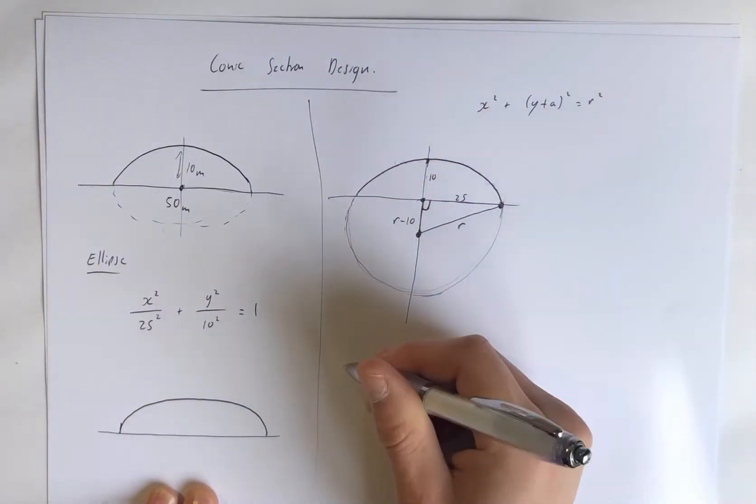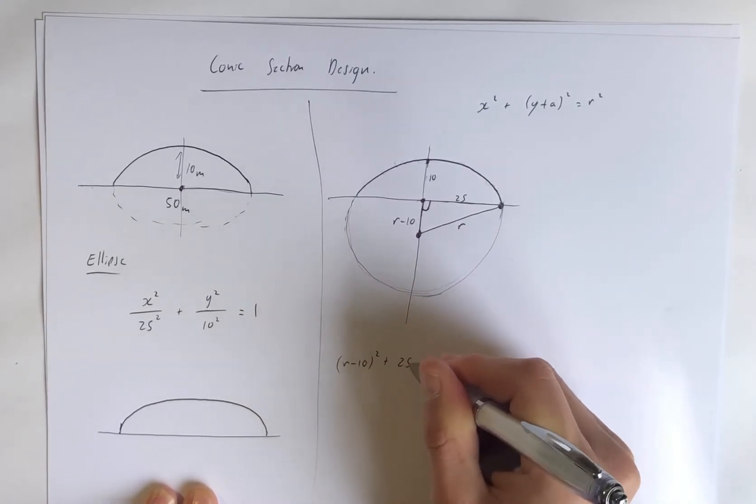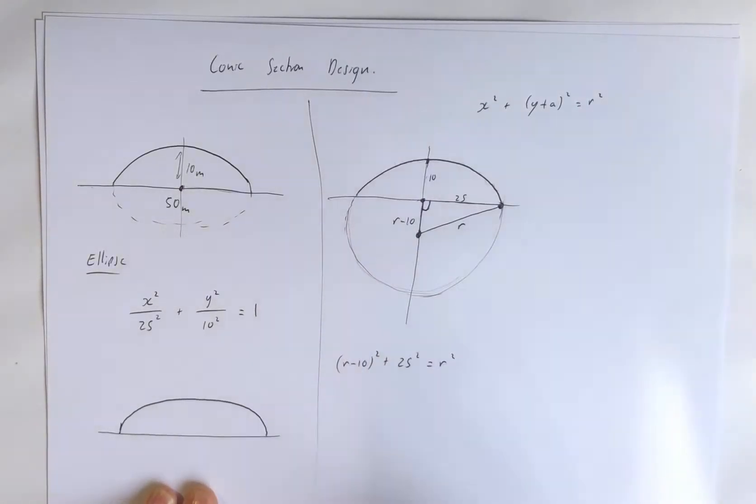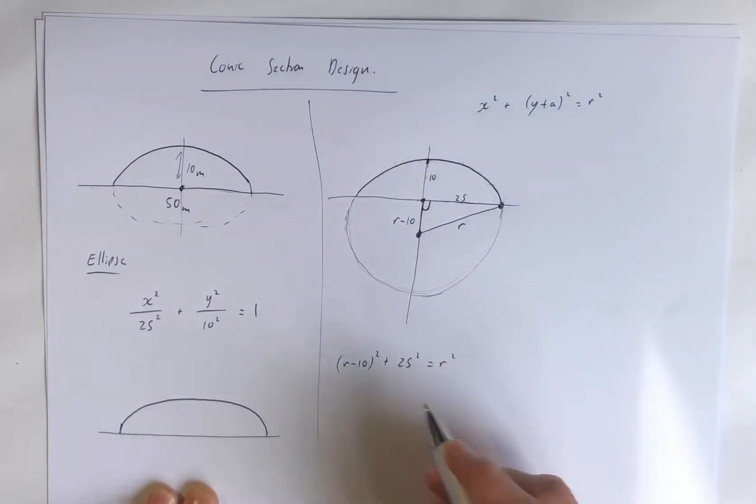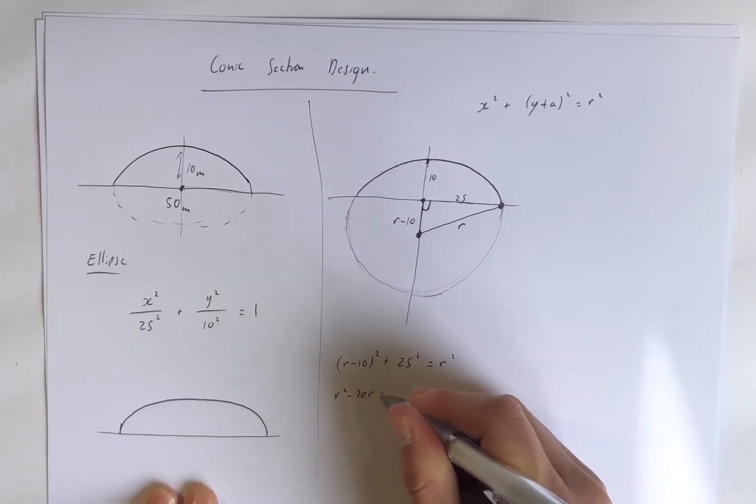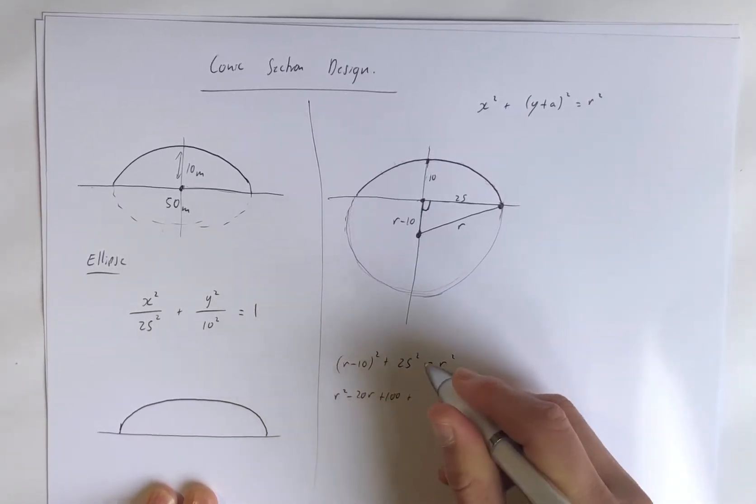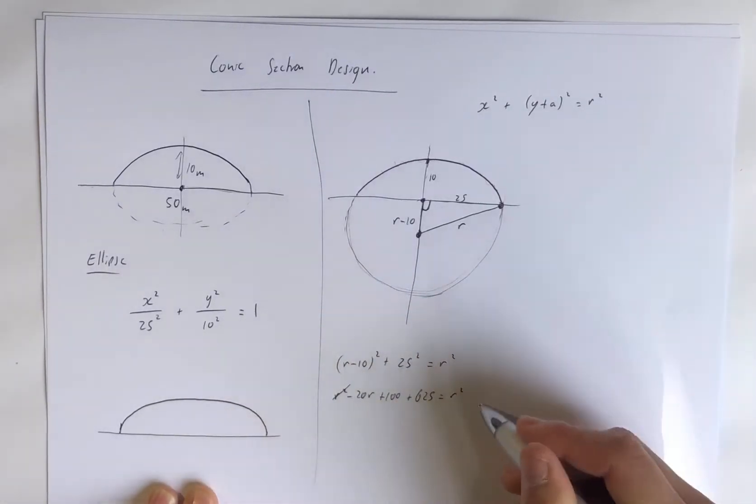So we can use Pythagoras here and say that (R minus 10) squared plus 25 squared is R squared from right angle trig from year 10. So if we were to expand and simplify this, we'd get R squared minus 20R plus 100 plus 625 is equal to R squared.